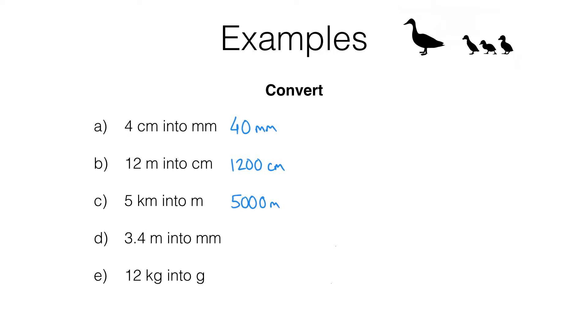Now let's have a look at question D. We need to take care with this one. We need to convert meters into millimeters. Now, if one meter is 100 centimeters and each of those 100 centimeters is worth 10 millimeters then one meter is 1000 millimeters.